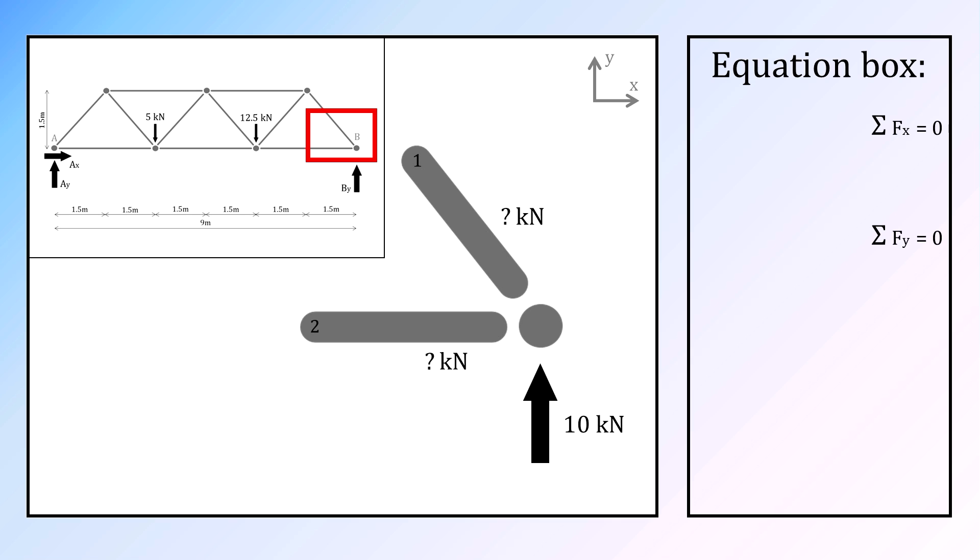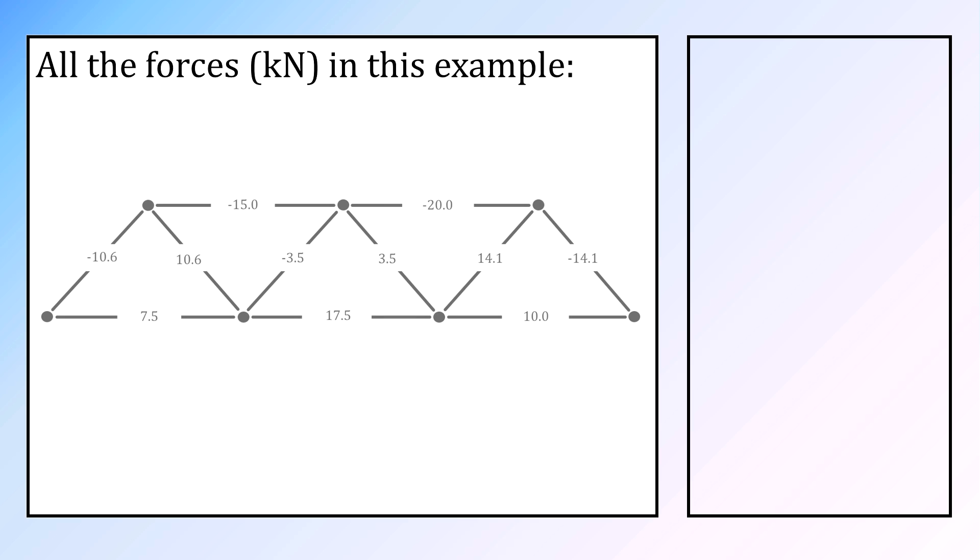Because our truss construction is built in such a way that the beams only carry forces in a longitudinal direction, the two formulas can be expanded as following. This results in a compressive force of about 14 kN in the upper beam and a tensile force of 10 kN in the other. That process can be repeated for every single beam in every type of truss bridge.